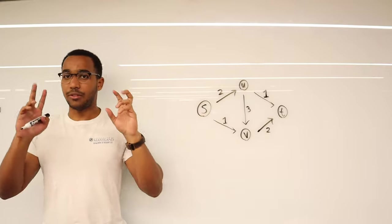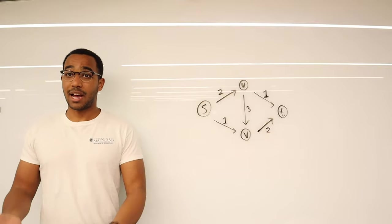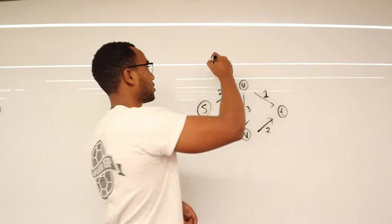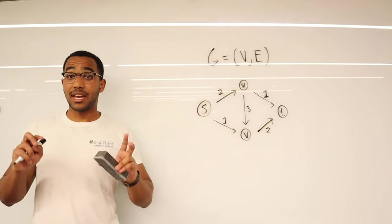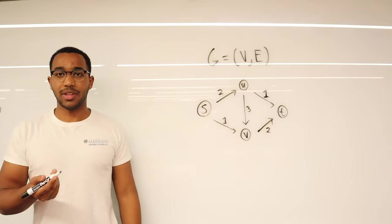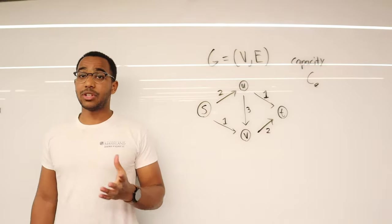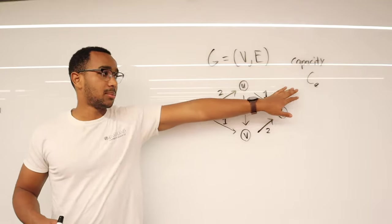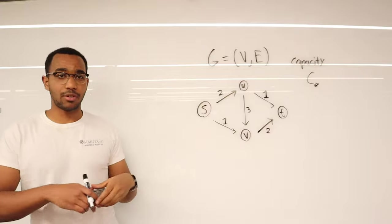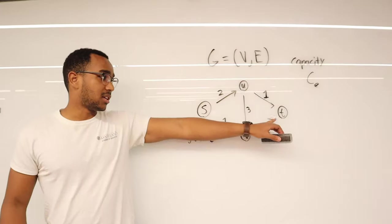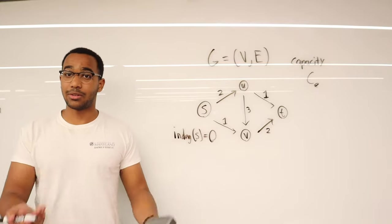We have a graph here called a flow network. It's a directed graph — also called a digraph — which is a set of vertices and a set of edges. Every one of these edges indicates a capacity, denoted as C of E. Every edge has a capacity C sub E. We have a start vertex with in-degree zero, and a sink T, which is a vertex with no outward-going edges, so its out-degree is zero.